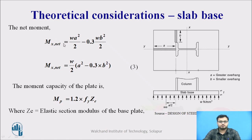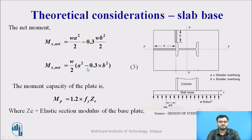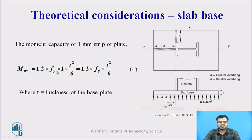The net moment Mx about the XX axis is WA²/2. Considering the Poisson effect, we subtract its influence from the other axis: WA²/2 − 0.3·WB²/2. Taking W/2 common, we get W/2·(A² − 0.3B²), where 0.3 is the Poisson's ratio. The moment capacity of the plate Mp equals 1.2·fy·Ze, where Ze is the elastic section modulus. For a 1 mm strip, Ze = 1·T²/6, so Mp = 1.2·fy·T²/6.